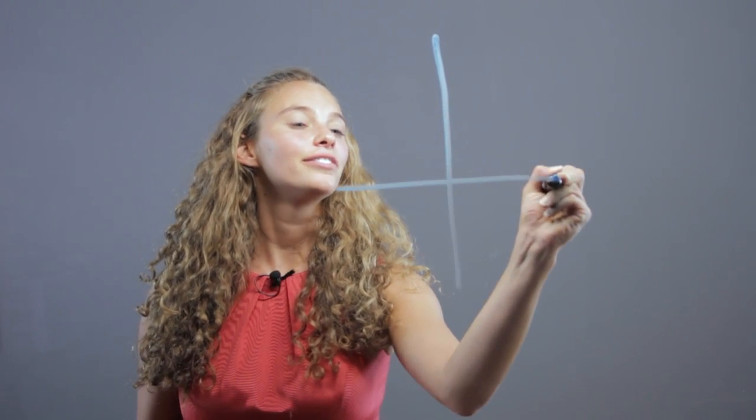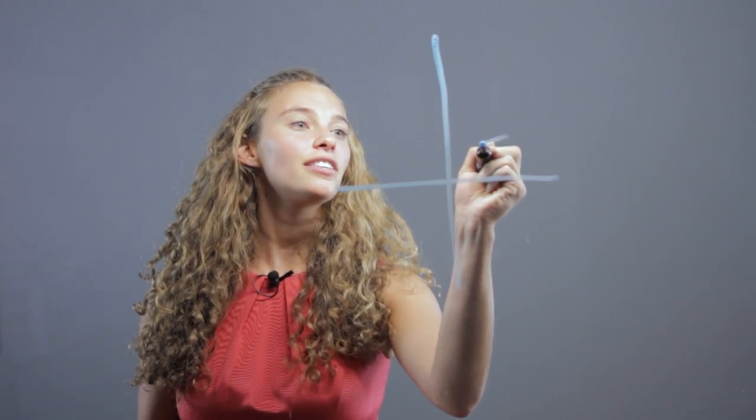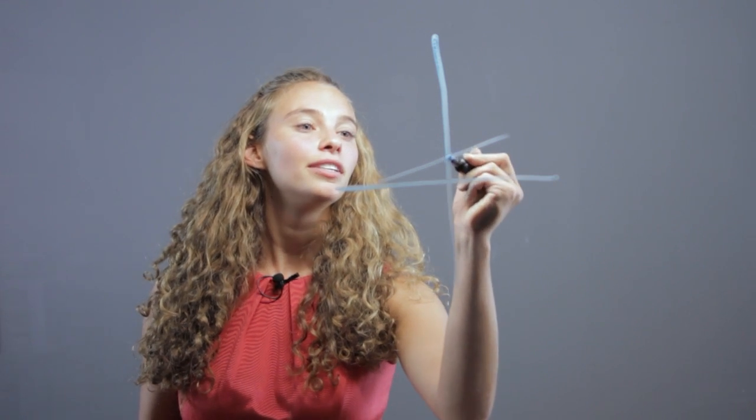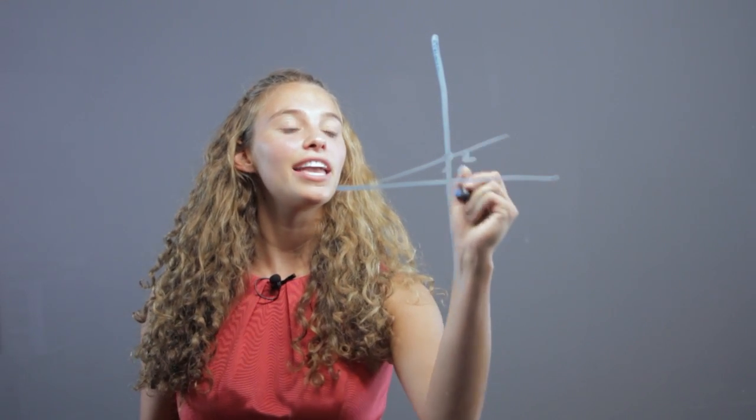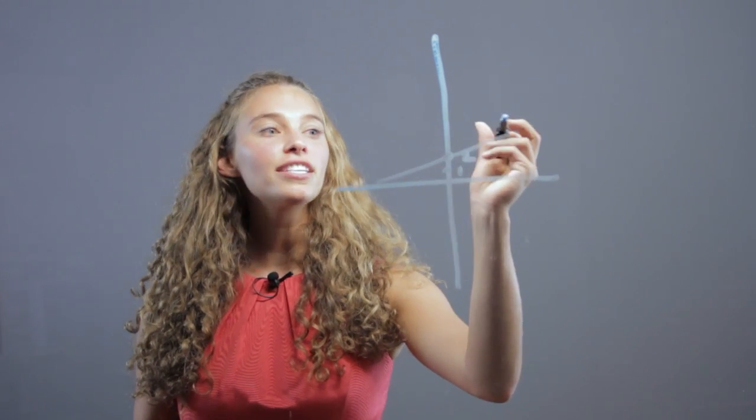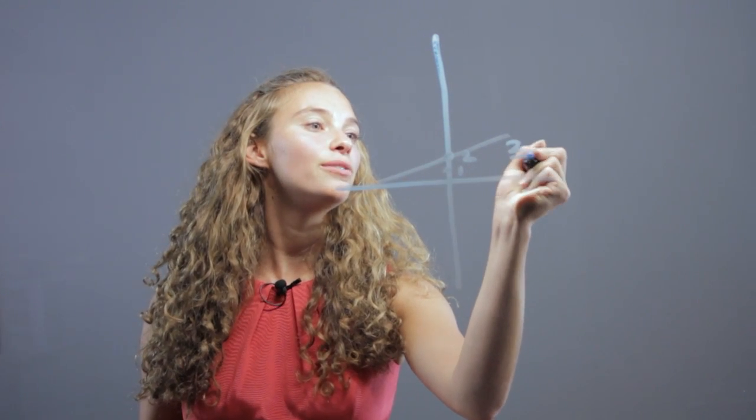So, here is our graph, and here is our line intercepting at 2 for the y-intercept. The slope of this line, let's say, is 2 thirds,